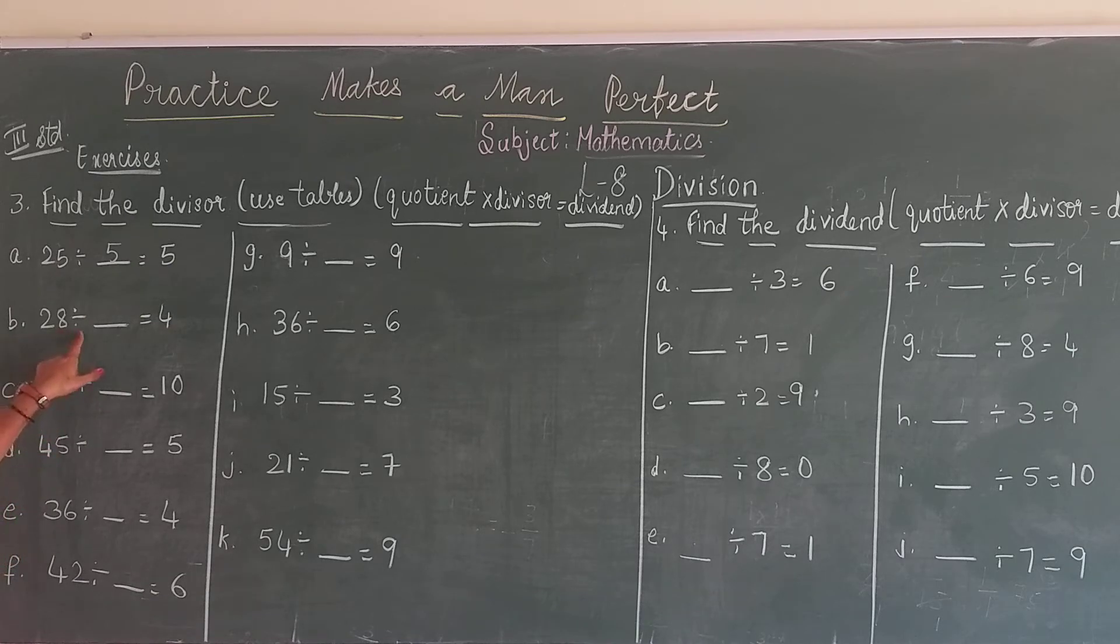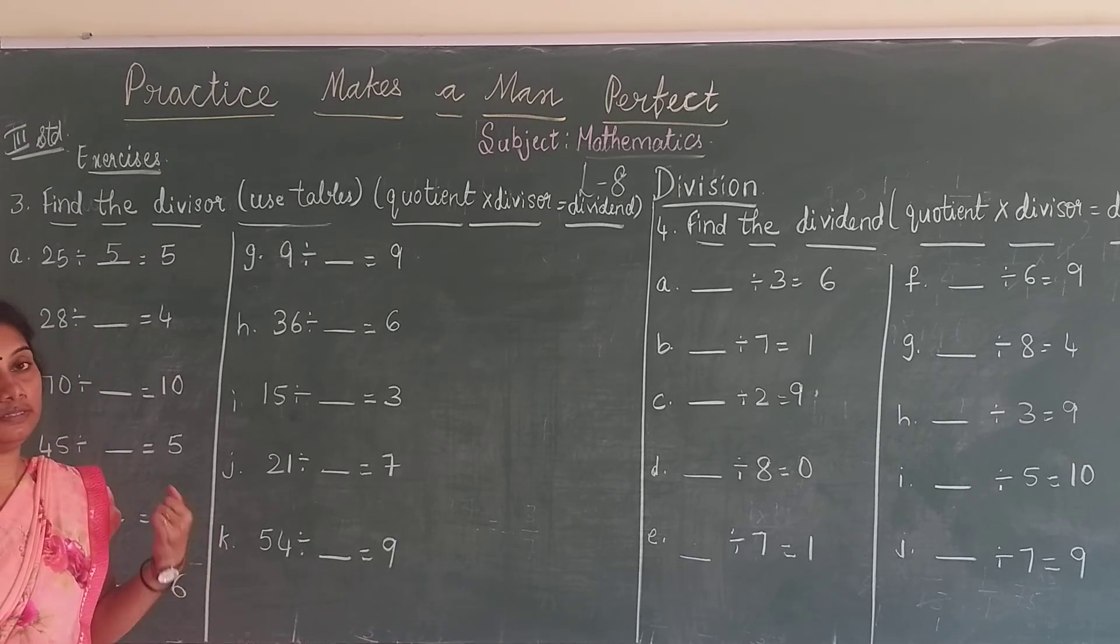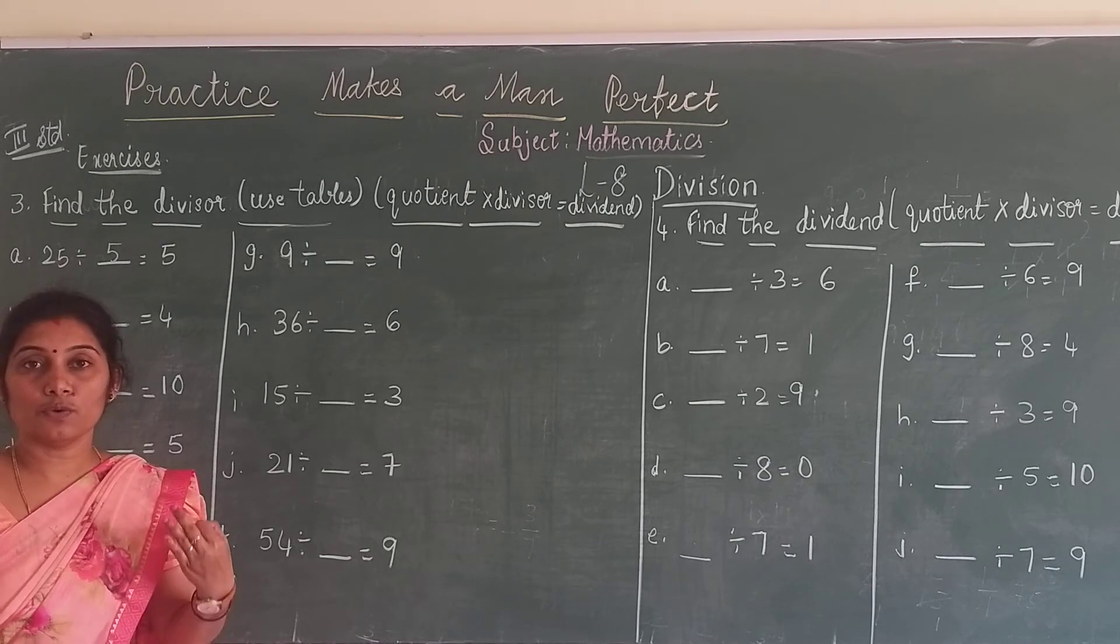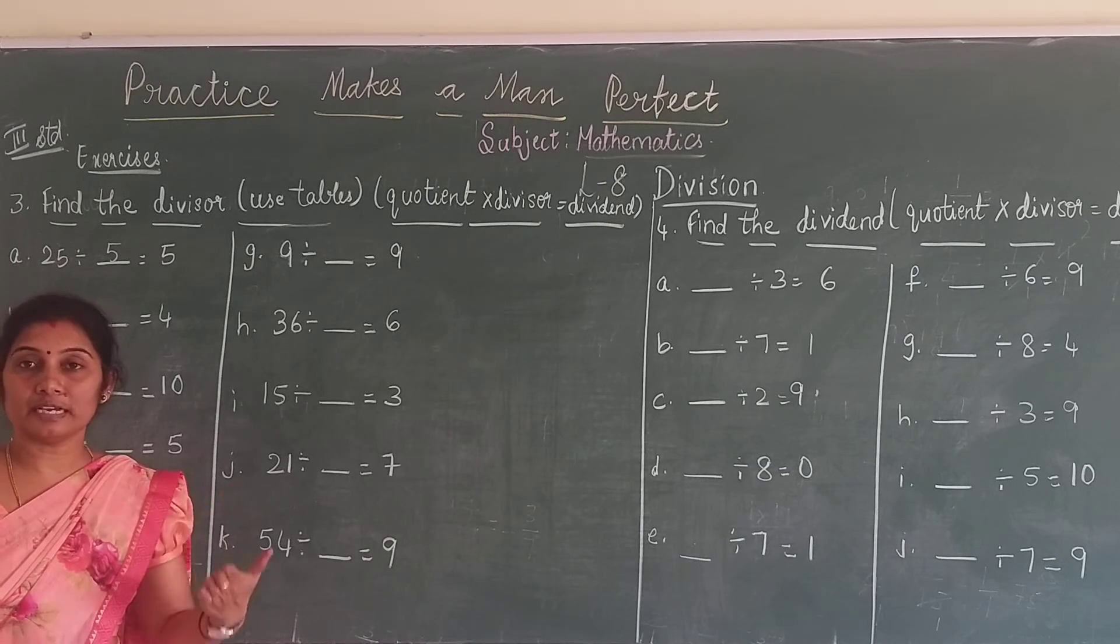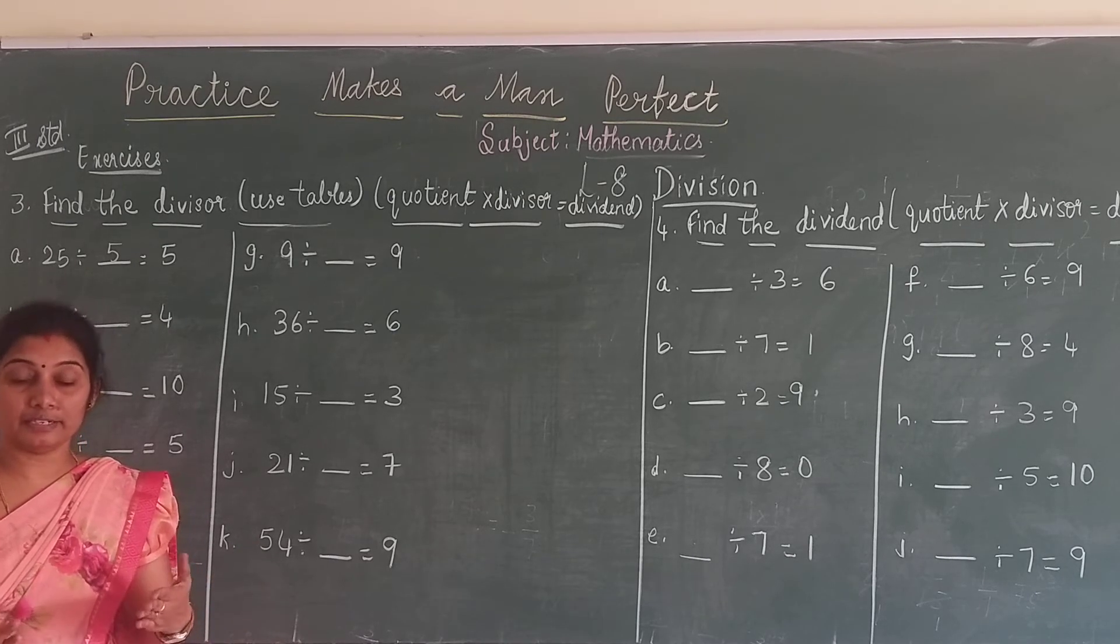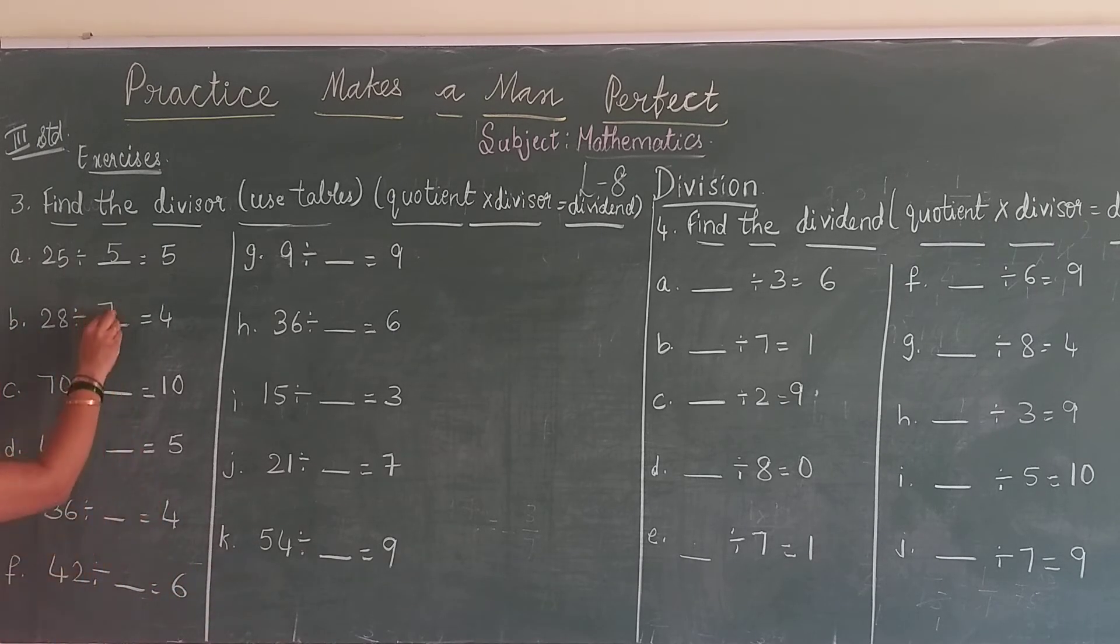Next, 28 divided by that will be equal to 4. From 4, 28 goes by how many times? See 4 ones are 4, 4 twos are 8, 4 threes are 12, 4 fours are 16, 4 fives are 20, 4 sixes are 24, 4 sevens are 28. So it is 7 times. So 7 is your divisor.